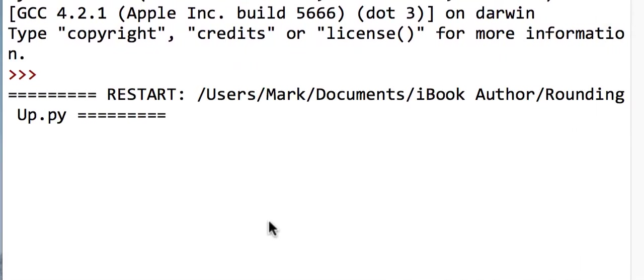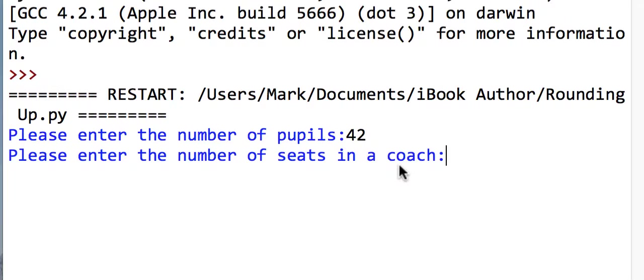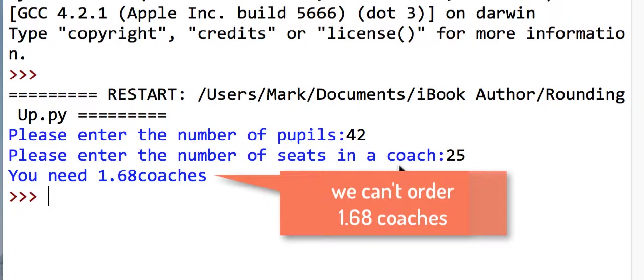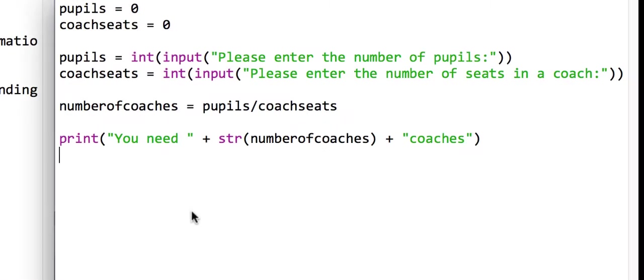If we quickly run this program and say we've got 42 pupils, and we can only fit 25 on a small coach, it's saying we need 1.68 coaches. Obviously we can't order 0.7 of a coach, so we need to round that up to the nearest whole number, which would be 2.